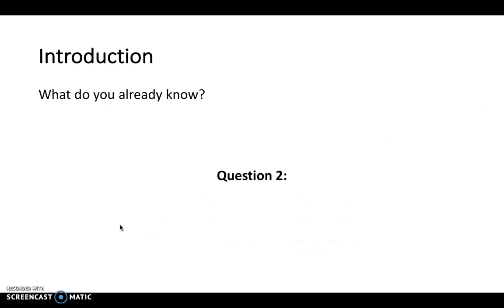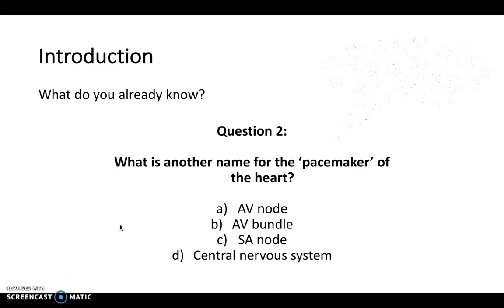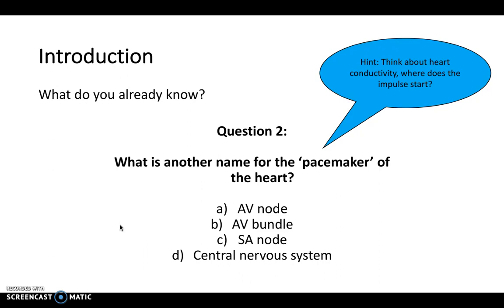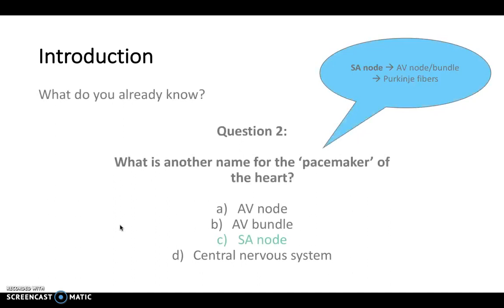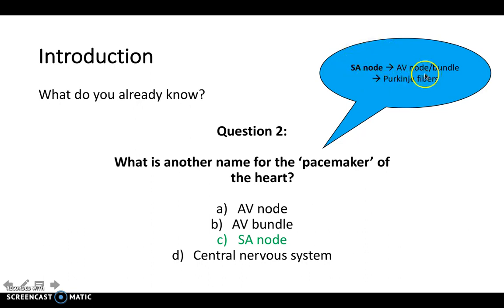Question two: what is another name for the pacemaker of the heart — is it A, B, C, or D? Think about the conductivity of the heart and where does the impulse start. The answer is the SA node, the sinoatrial node, because the order of transmission of the electrical impulse is through the SA node to the AV node or bundle, and then to the Purkinje fibers.